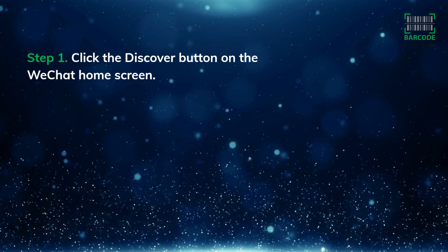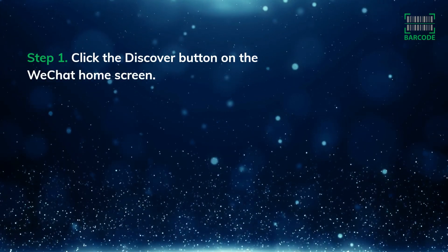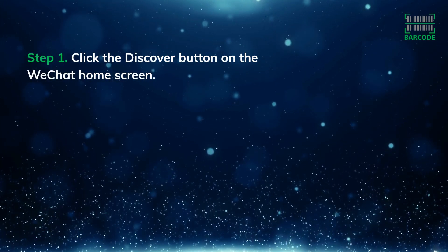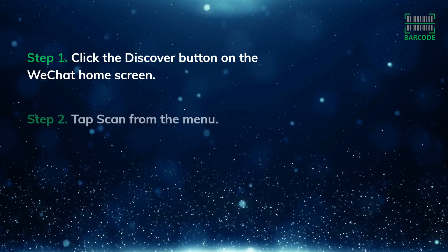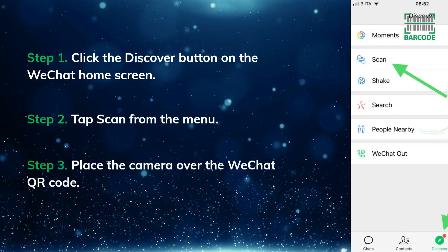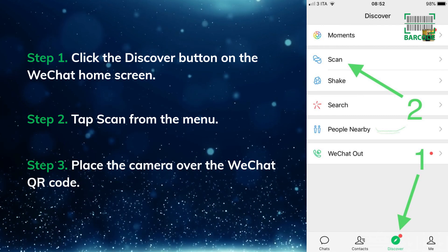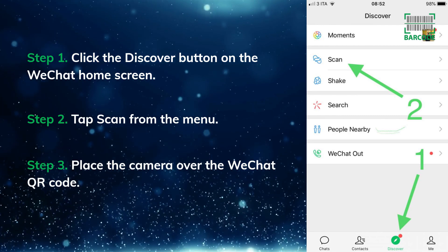Step 1: Click the Discover button on the WeChat home screen. Step 2: Tap Scan from the menu. Step 3: Place the camera over the WeChat QR code.